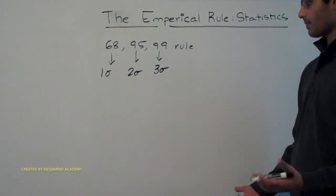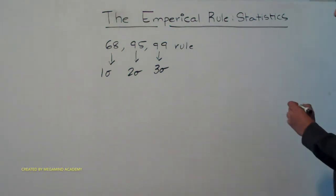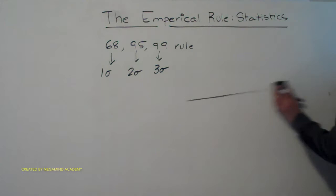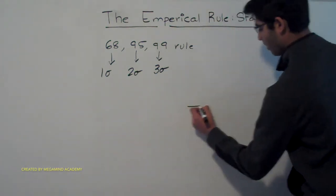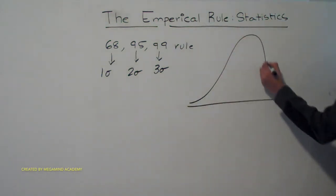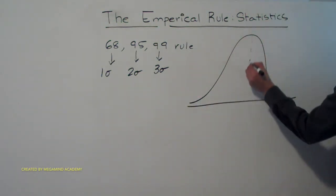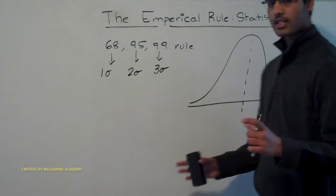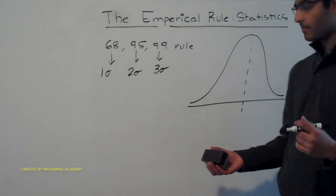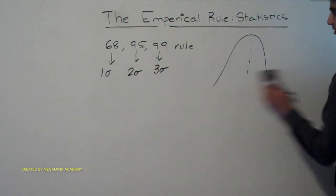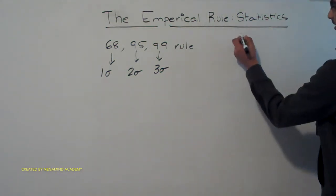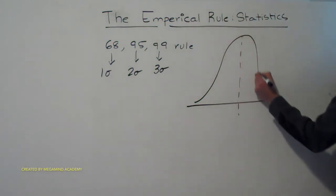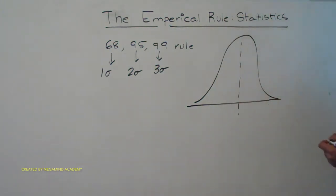So now, how does this relate to anything? Well, the empirical rule deals with the normal distribution. The normal distribution is the type of curve that looks something like this. And here we have the center. Now the empirical rule basically tells us what percent of the data lies within some deviation from the mean, or some deviation from the center. So let's assume that this looks like a normal distribution.